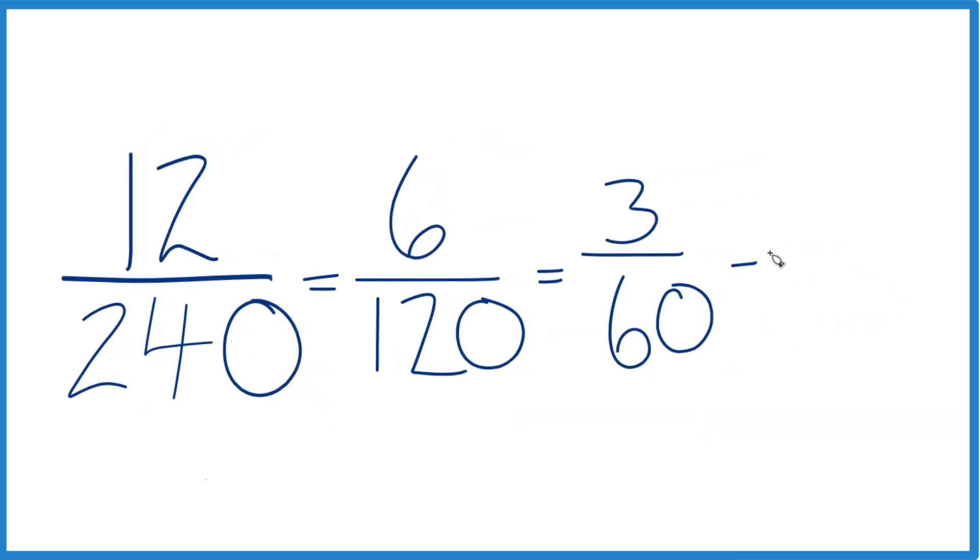And now I can see that 3 goes into itself evenly, and 3 should go into 60 evenly. 3 times 20 is 60. So 3 divided by 3, that's 1, and 60 divided by 3 is 20.